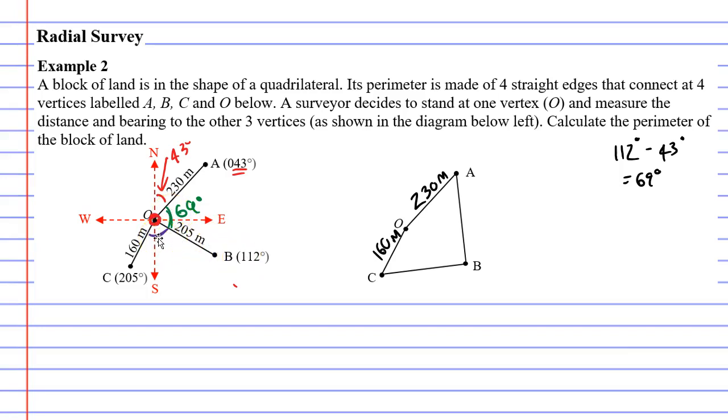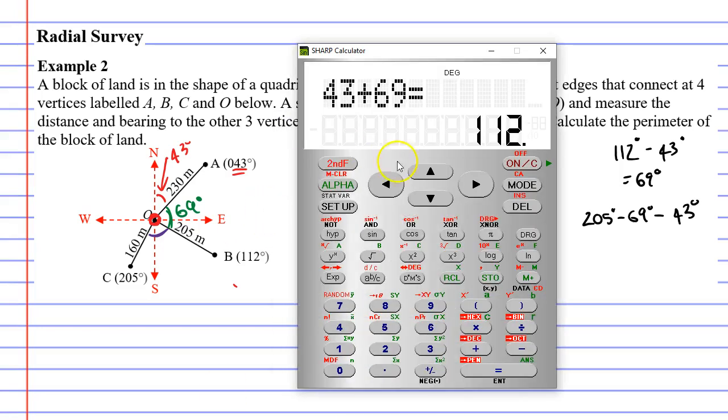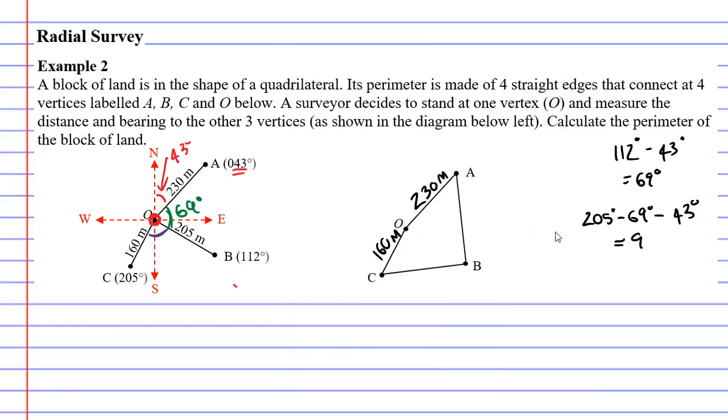Now let's focus on the purple angle this time. The bearing at C is 205 degrees. And what you want is for the red angle, the green angle, and the purple angle to all add up to 205 degrees. So what we'll do for this one is take 205 degrees, subtract the green angle of 69 degrees, and subtract the red angle of 43 degrees. 205 minus the 69 degree angle minus the 43 degree angle is 93 degrees. So the purple angle is 93 degrees. And if you added these three angles up, the red, green, and purple, they would all add up to 205 degrees.